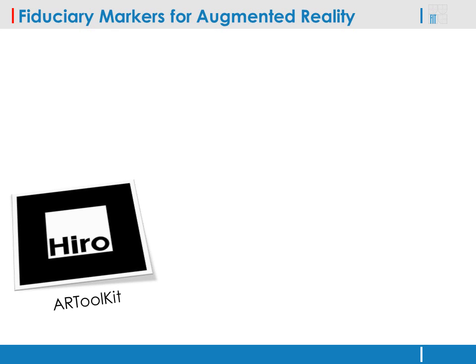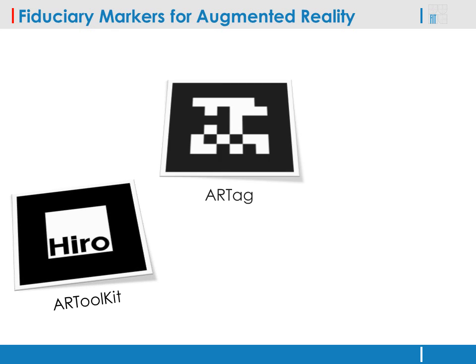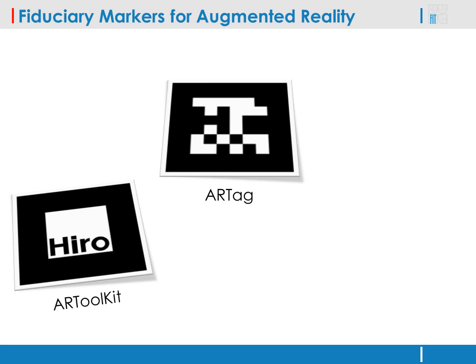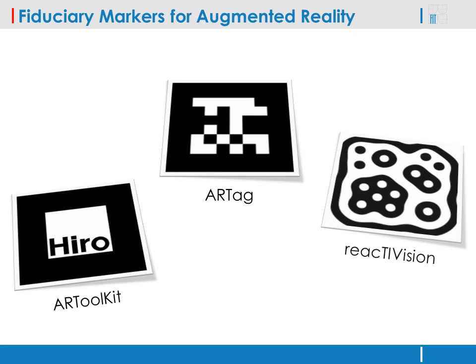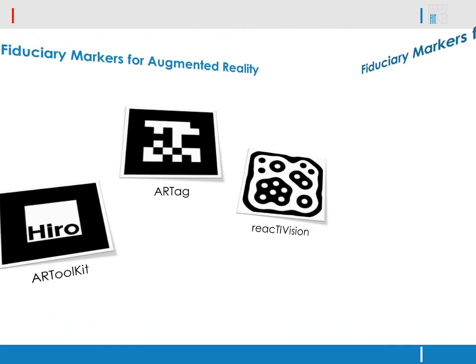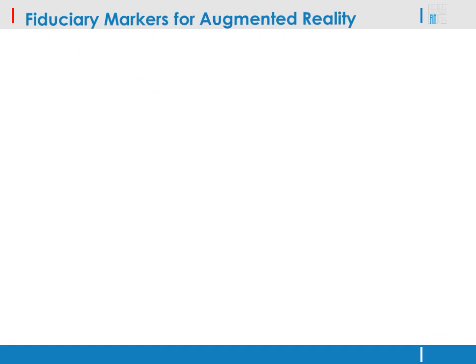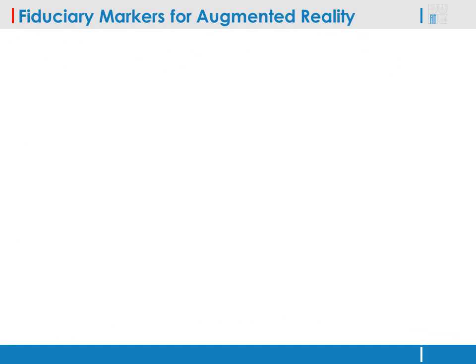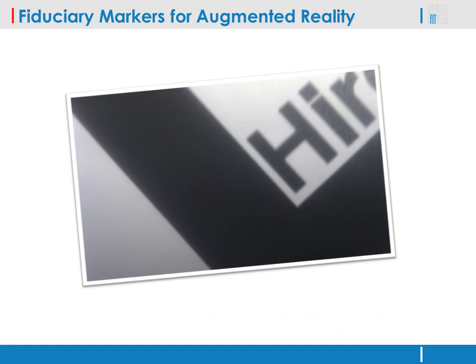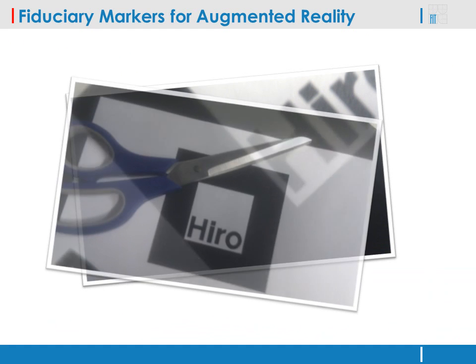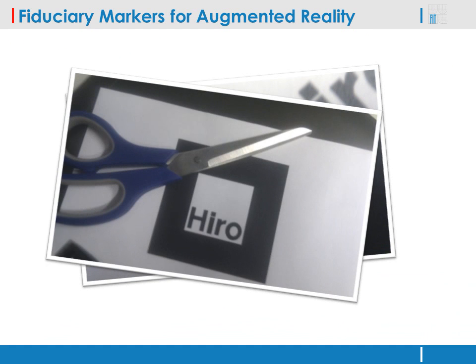There are a number of fiduciary marker designs. When observed by a camera, they can help reliably and accurately establish the camera position within the scene. In order to be recognizable, the markers must cover a significant area of the camera image and they must not be occluded by other objects.